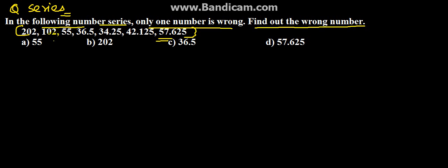The series is 202, 102, 55, 36.5, 34.25, 42.125, and 57.625. The options given are 55, 202, 36.5, and 57.625.